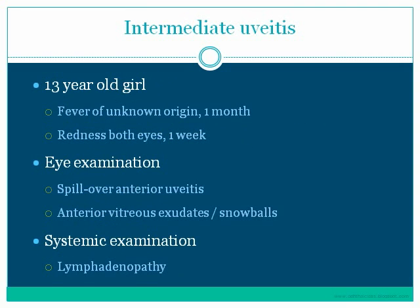A 13-year-old girl presented with fever of unknown origin for one month and then developed redness of both eyes for one week. Ocular examination revealed fine KPs and few cells in the anterior chamber, indicating spillover anterior uveitis. Dilated fundus examination revealed anterior vitreous exudates and snowballs in the vitreous, leading to the diagnosis of intermediate uveitis. The systemic cause was not found initially, but the physician noted lymphadenopathy.